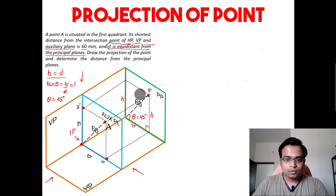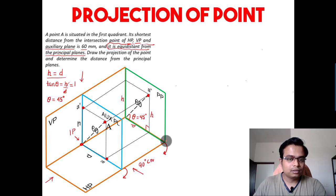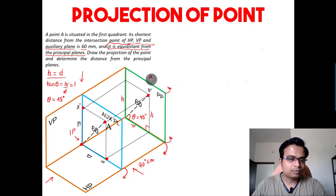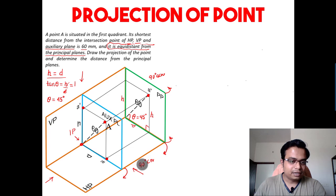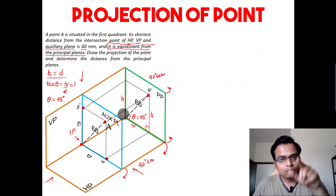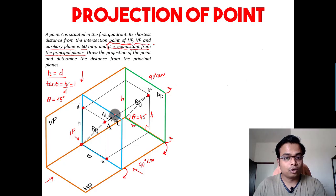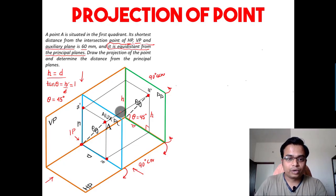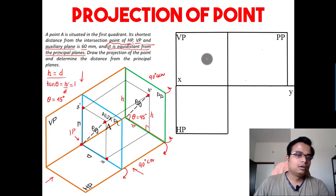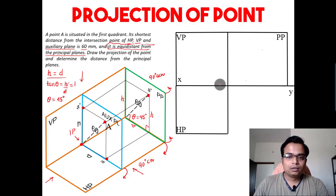What we'll do next is rotate the horizontal plane by 90 degrees clockwise, and rotate this profile plane 90 degrees anticlockwise, so that it becomes coplanar with the vertical plane. After rotating, all of these planes are going to lie in one single plane — that is your drawing sheet — onto which you are going to draw this entire projection.